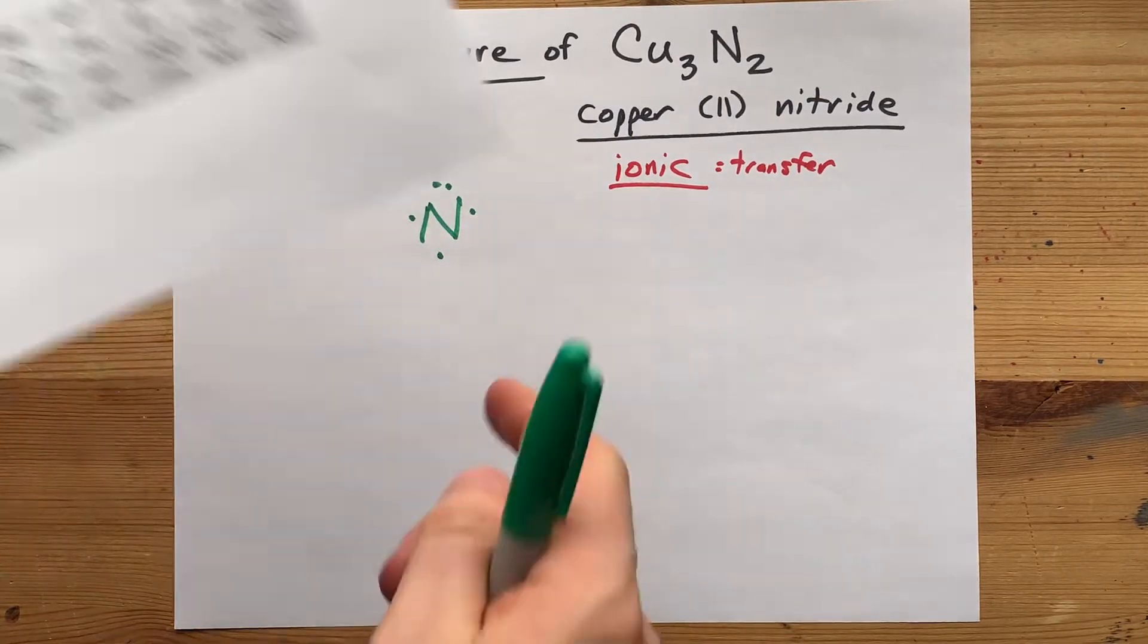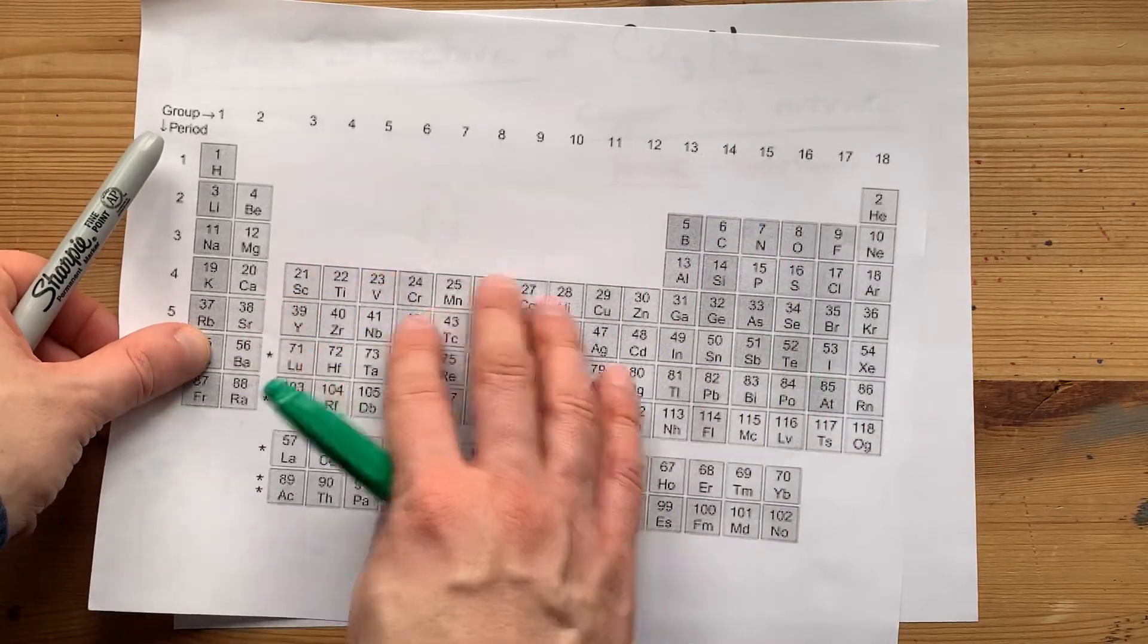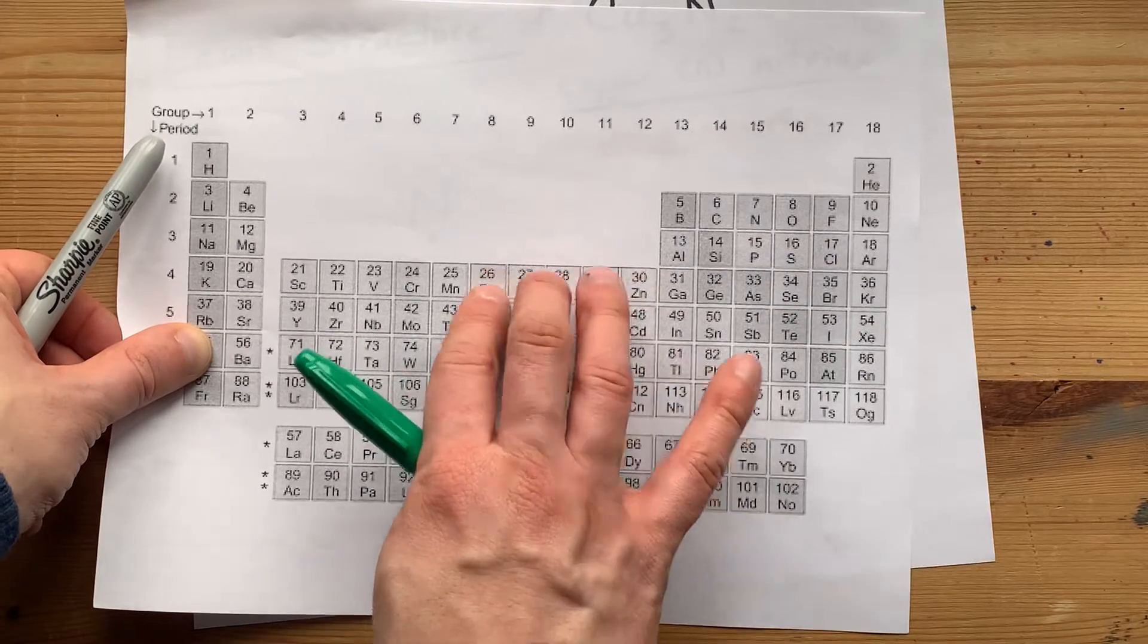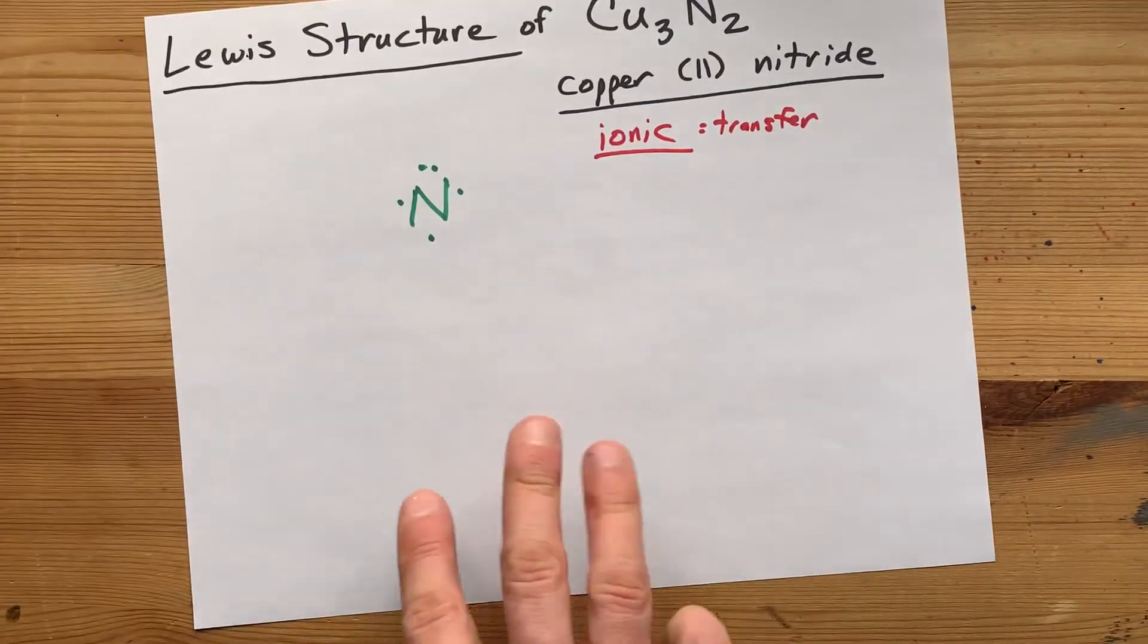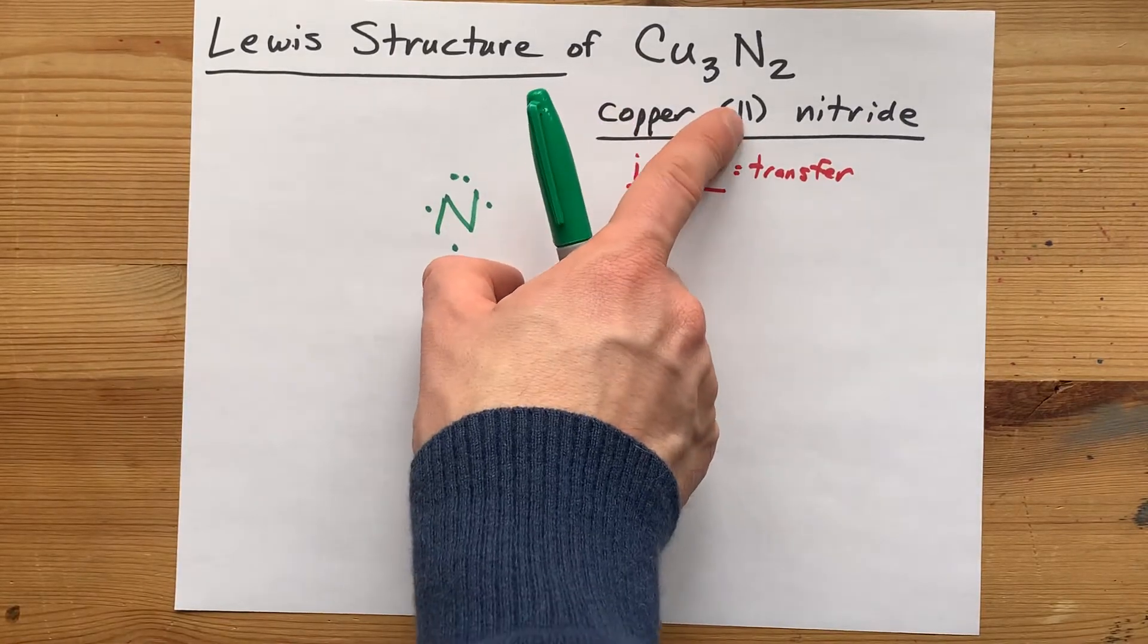Now, that shortcut I just showed you about the number of valence electrons being the group number actually doesn't apply here in the transition metals, because each of these atoms can have more than one possible charge. You have to base it off of the charge itself.